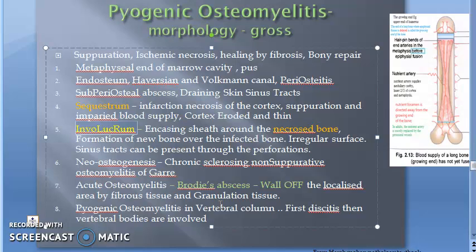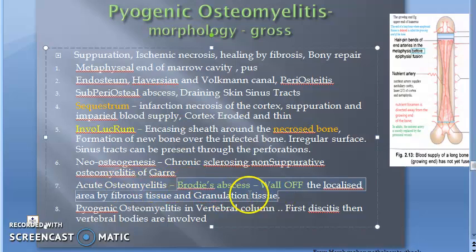The Involucrum has an irregular surface with perforations through which sinus tracts can pass. Then there is neo-osteogenesis. In acute osteomyelitis, sometimes there can be a Brodie's Abscess — completely walled off by fibrous tissue and granulation tissue. In the vertebral column, if pyogenic osteomyelitis is present, discitis occurs first and then the vertebral bodies get involved.